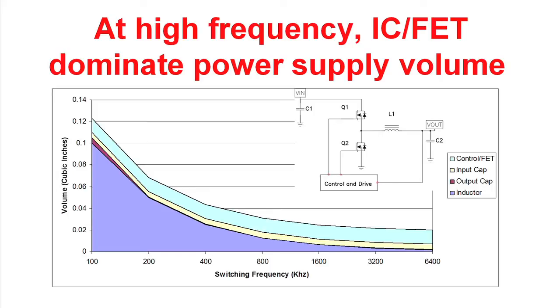The next item on the chart is the input filter capacitor. The volume of the input filter capacitor is set by the ripple current rating, and the ripple current is pretty much independent of frequency in this power supply. Hence the volume of the input capacitor does not change very much. Again, that's true on the control and FET portions of the volume. Their size does not significantly vary with the operating frequency of the power supply.